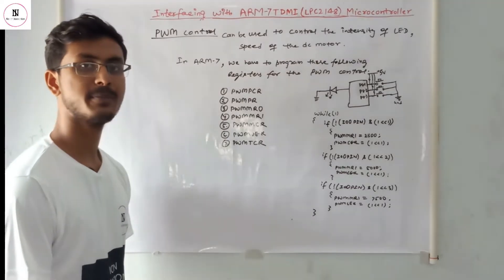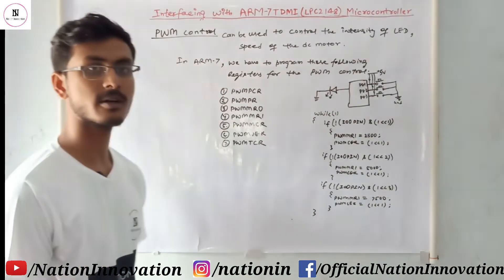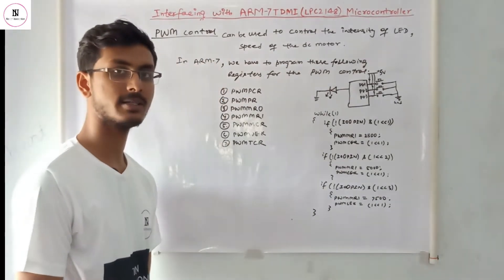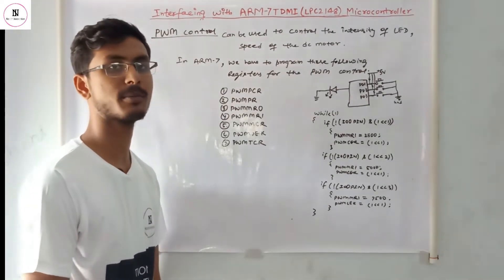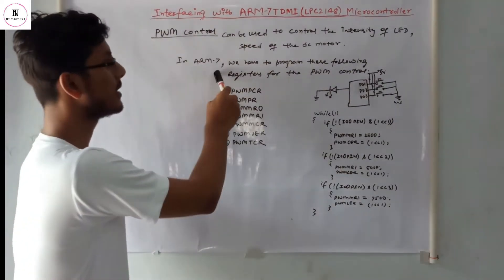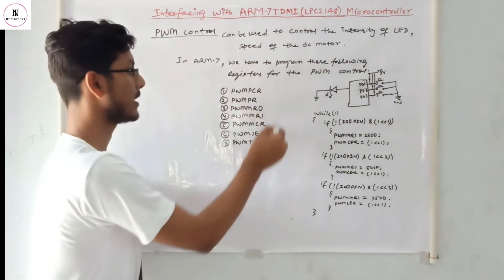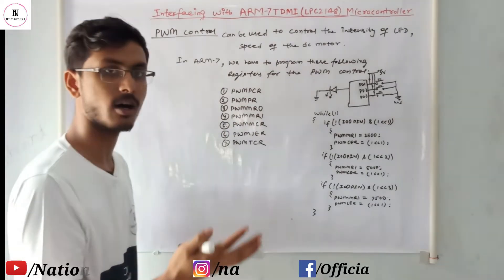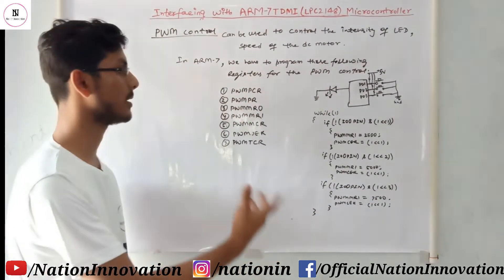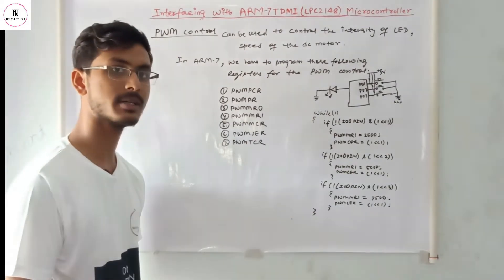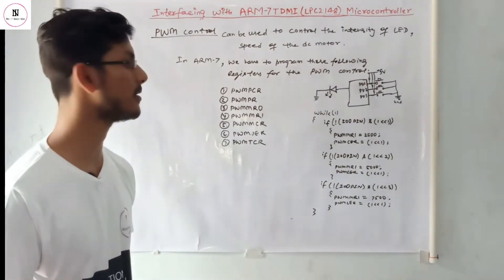Today we are going to learn about PWM control. PWM control can be used for controlling the intensity of LEDs and the speed of a motor can be varied with the help of PWM control. In ARM7 we have to program certain registers, which are used for controlling the width of the pulse, from which we can vary the intensity of LEDs or control the speed of a motor.